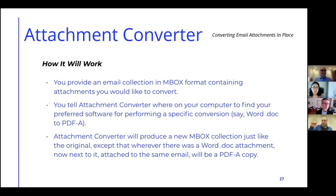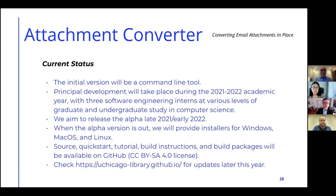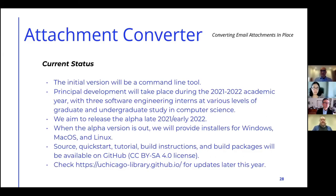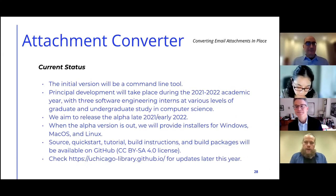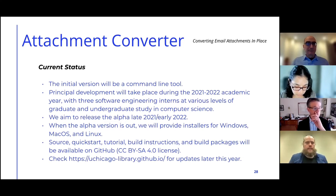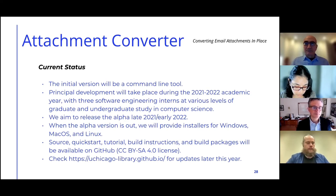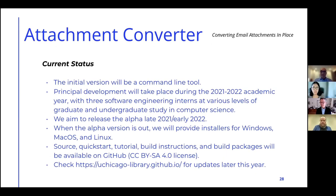Once you're done, you should have copies of all the things you're interested in next to the originals. For now, we are focused on creating Attachment Converter as a command line tool. The main reason is that we need to be able to automate things — running a program by typing a command is really useful for our purposes here at the University of Chicago. Another reason we're focused on making it a command line tool is that at this early stage, we really want to make sure it works correctly with no weird bugs and that everything is left in place safely.